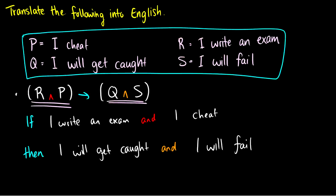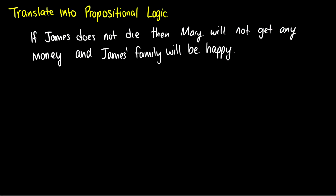Now that we've done a well-formed formula into English, let's do English into a well-formed formula. So I have this sentence here. If James does not die, then Mary will not get any money and James' family will be happy. So the first thing I want to do is look at all the connectives. So the first thing I see here is an if-then statement.